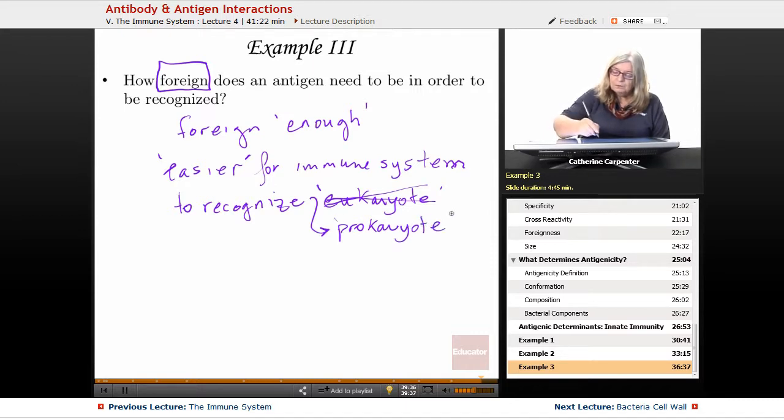And why? Because a prokaryote is a cell that does not have a nucleus. What is the number one prokaryotic pathogen? It's bacteria.